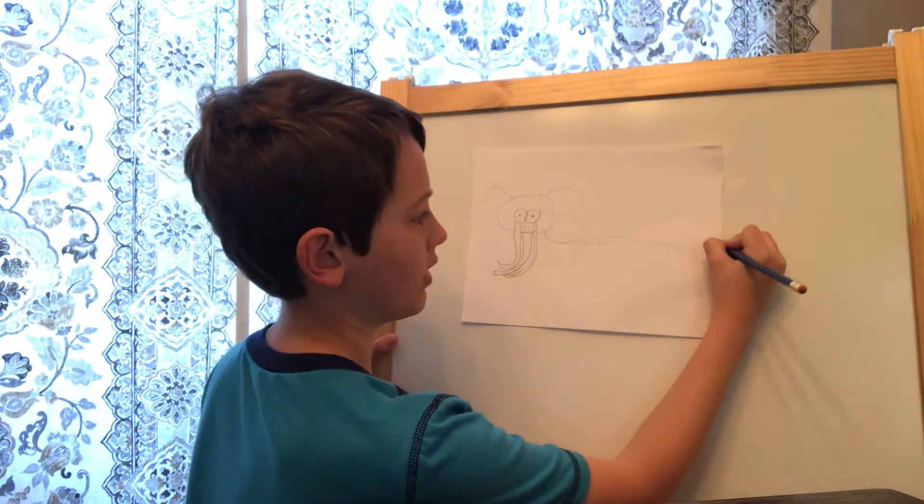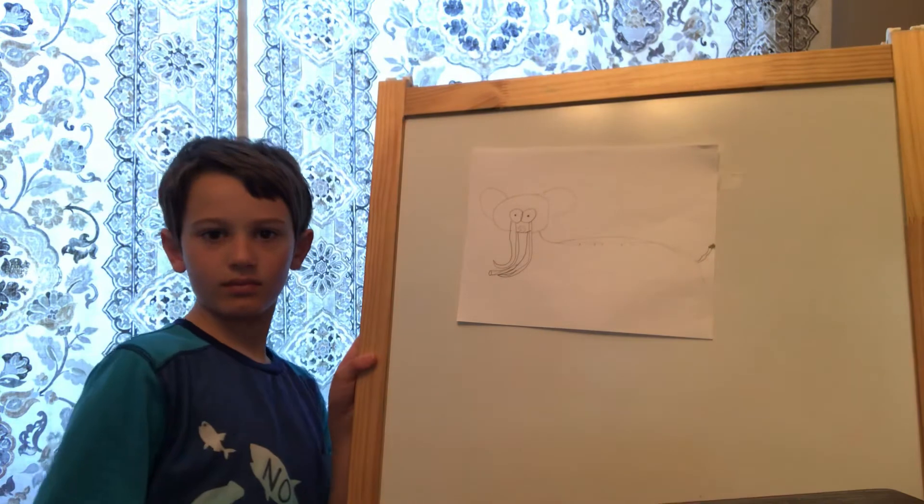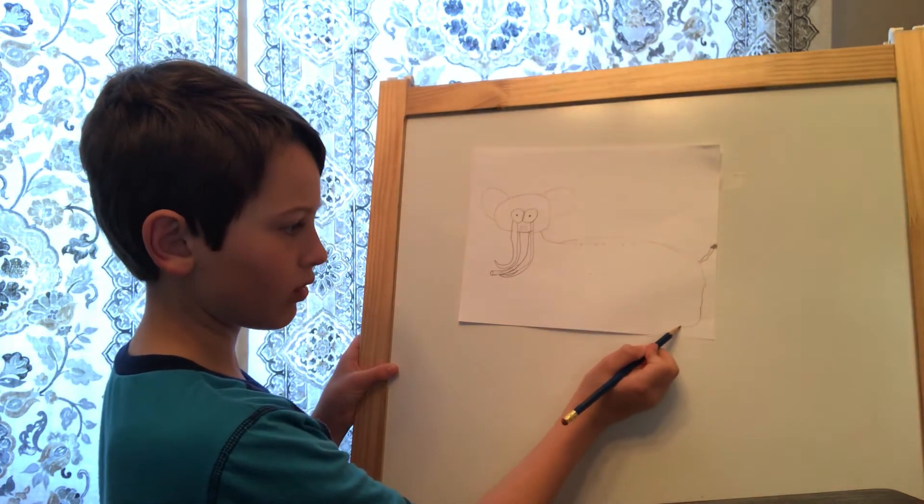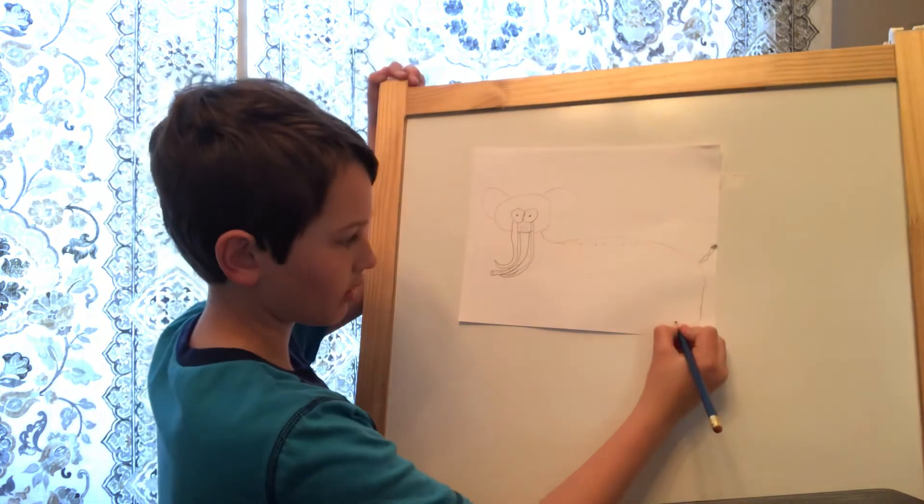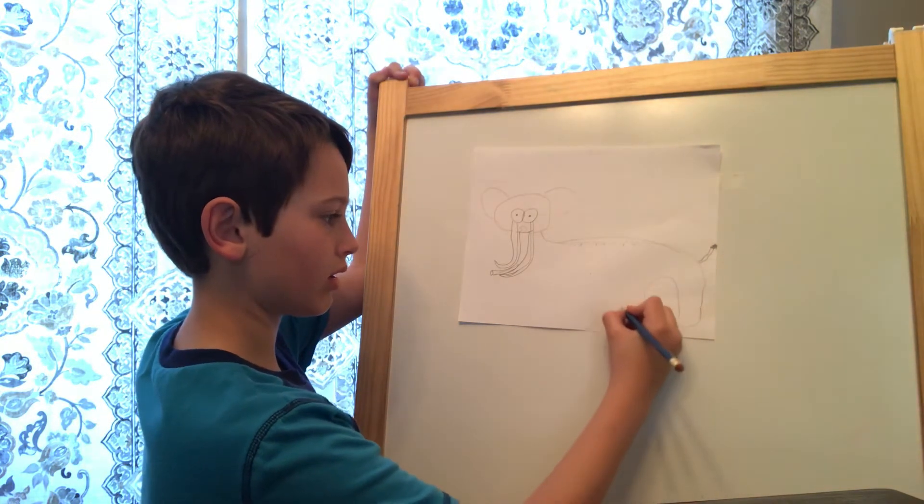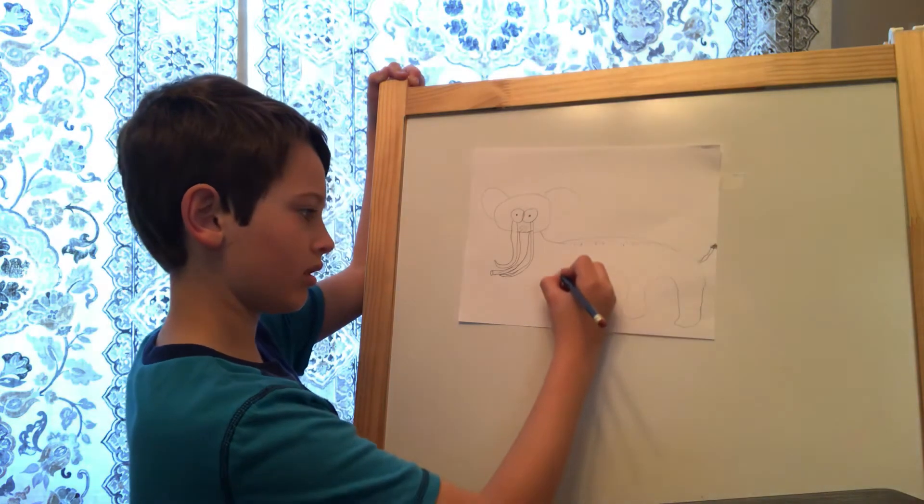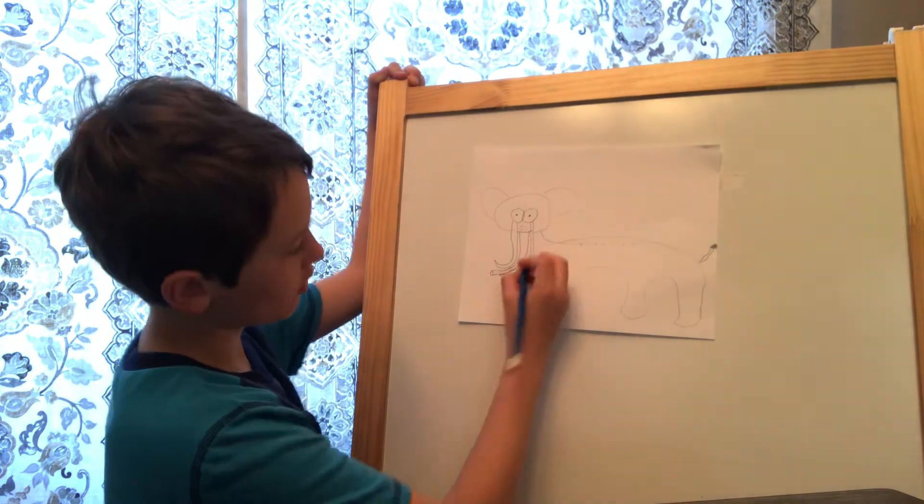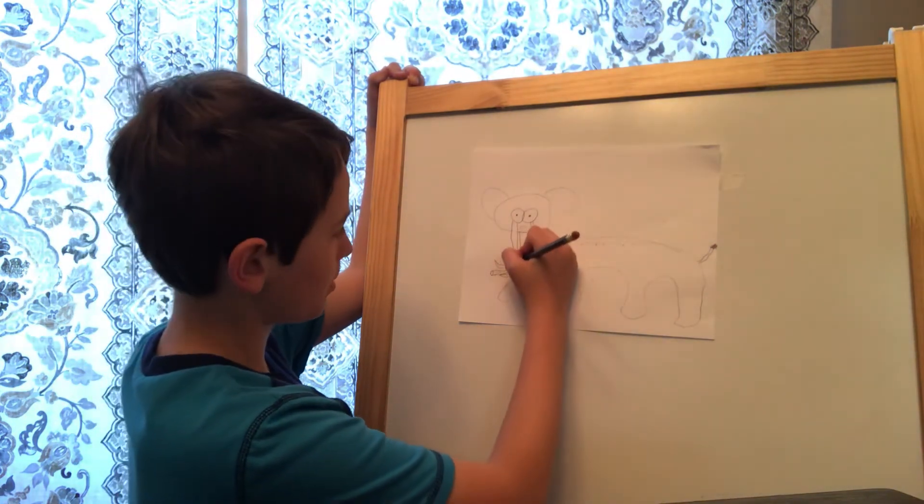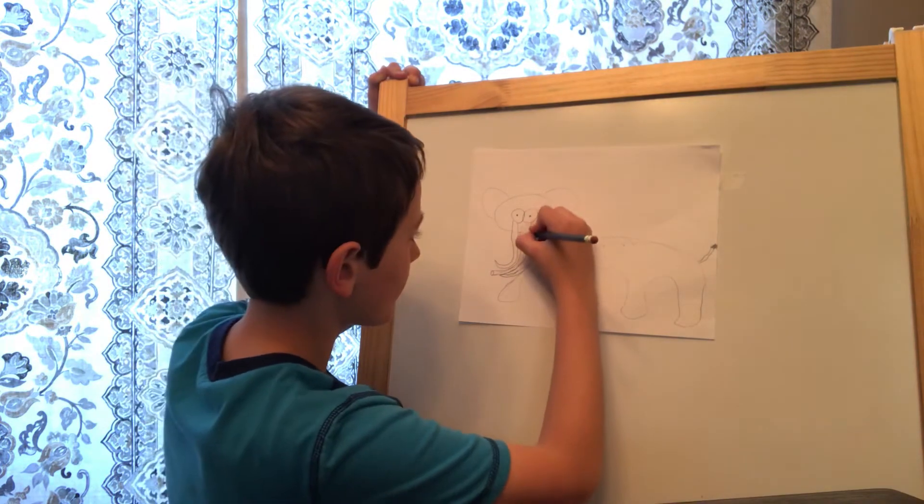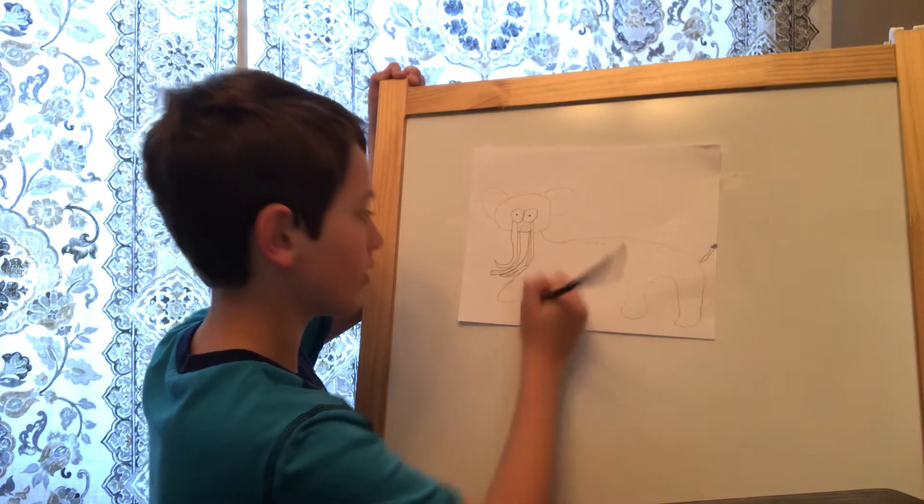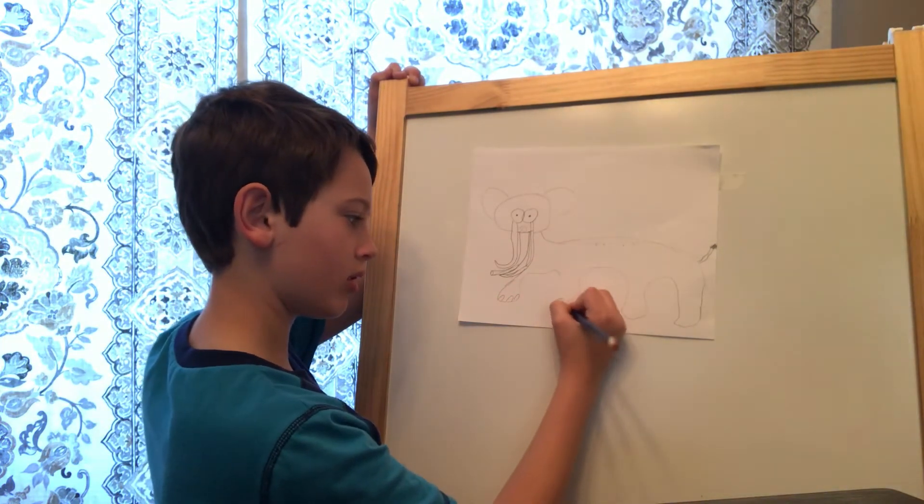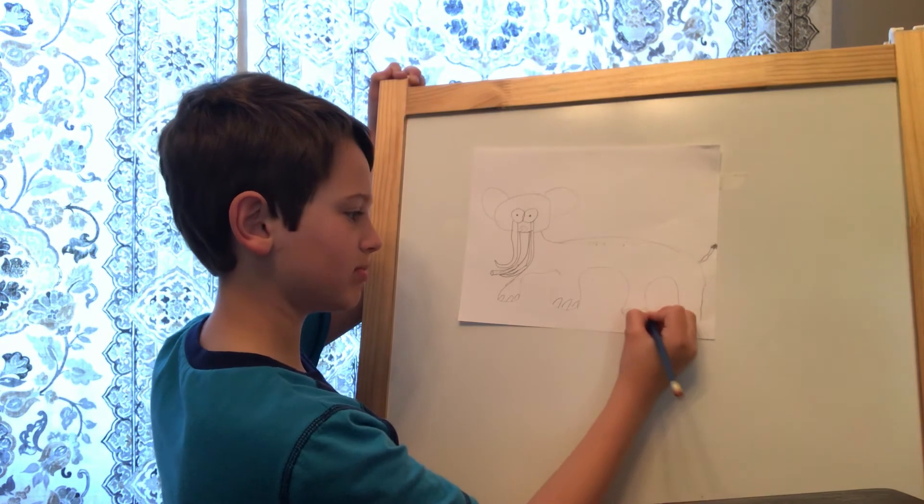Legs. We curve it, go up, again. We go up like this. There. And then we make three toenails. You can make them as big as you want.